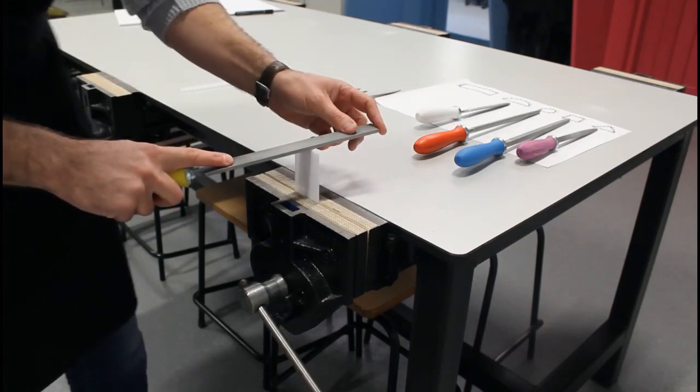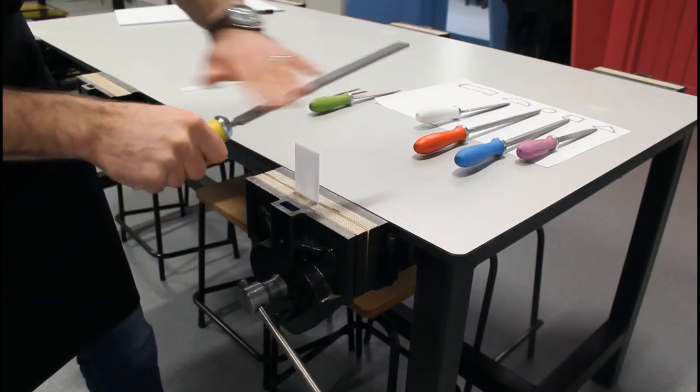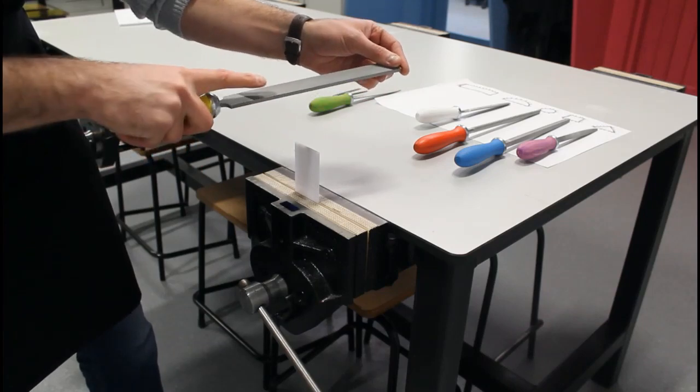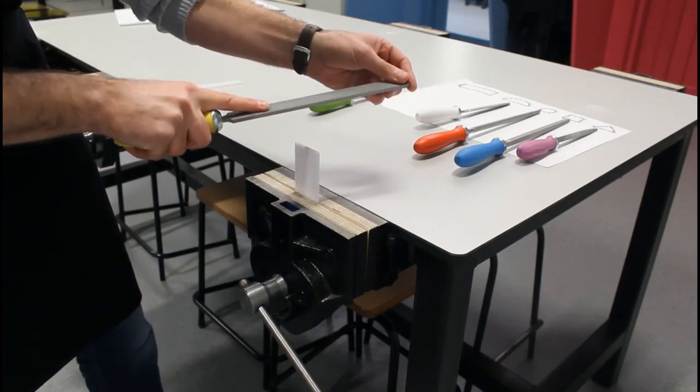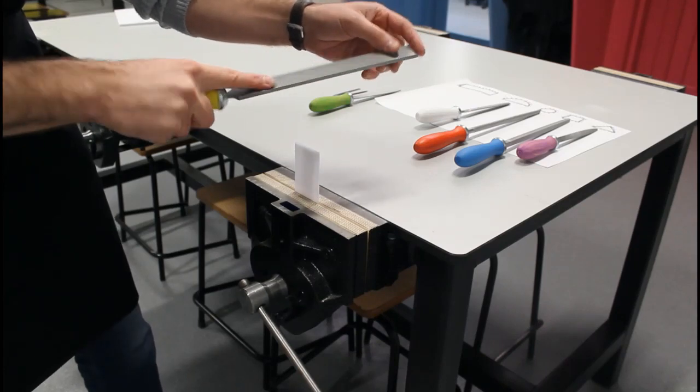Now if you notice here what I've done, I'm in my stance. I'm holding my file by the handle. For a long file like this, I can hold it up here at the top and for stability, sometimes I like to put my finger here at the top so it allows me to stabilize the file.